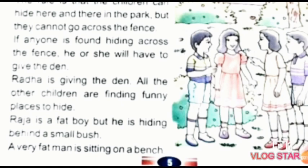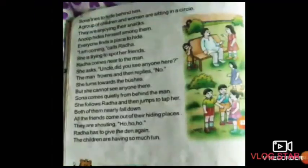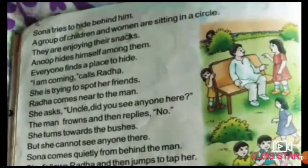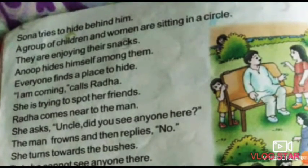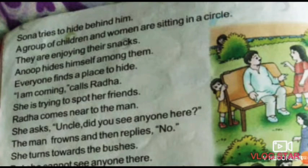He is a fat boy but he is hiding behind a small bush. A very fat man is sitting on a bench. Sona tries to hide behind him. A group of children and women are sitting in a circle.